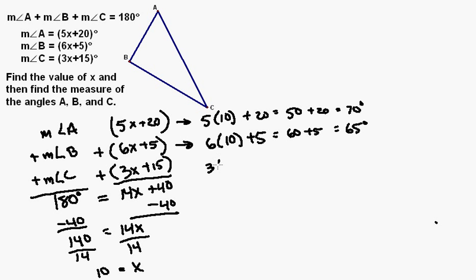And then we have 3 times 10 plus 15, which is equal to 30 plus 15, which is equal to 45 degrees.